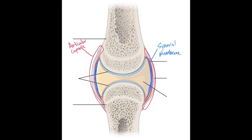The synovial membrane is important because it secretes synovial fluid inside the articular cavity. This space right here is the articular cavity. The synovial membrane secretes synovial fluid into this articular cavity. Synovial fluid provides lubrication between the two bones that are articulating with each other, as well as nourishment for all the tissues and cartilages found within the joint.